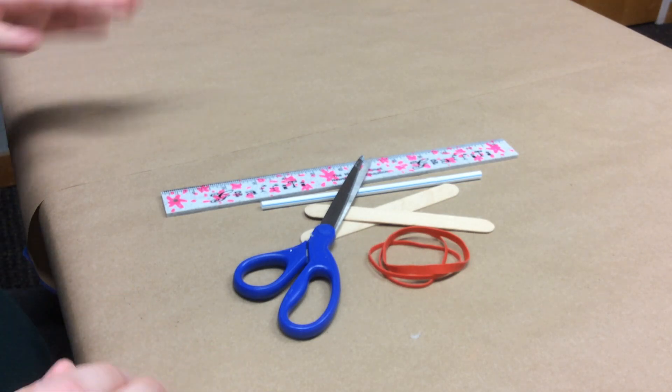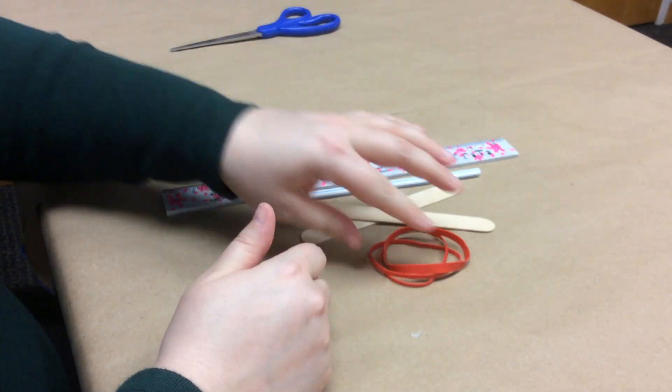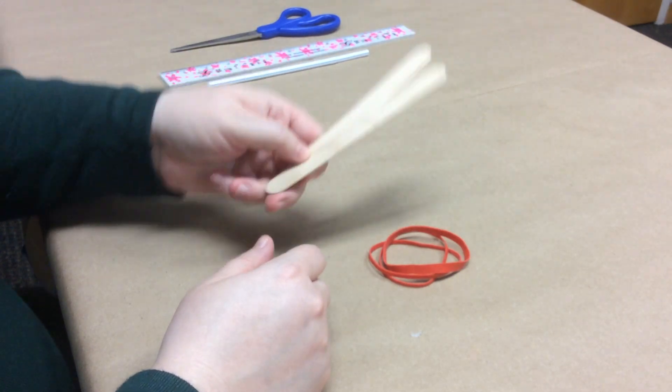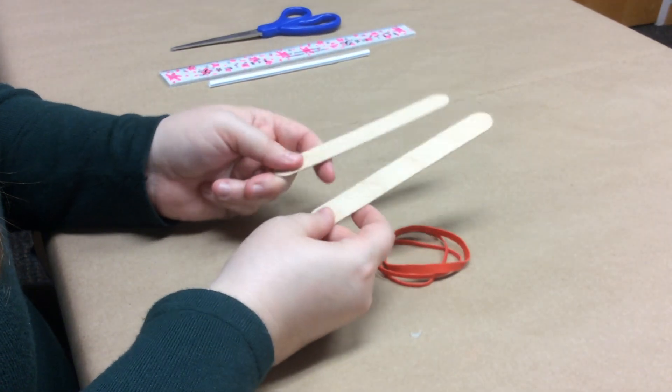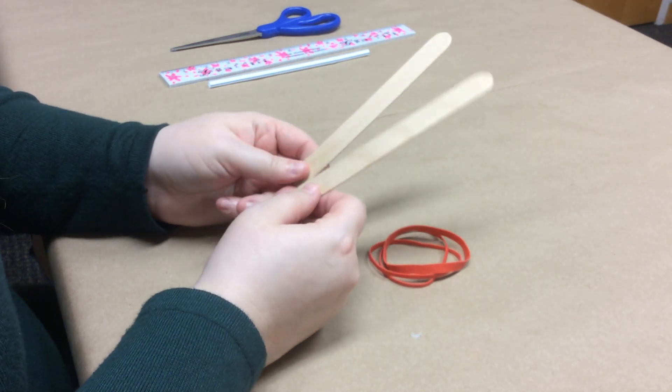For this activity, you are going to need a pair of scissors, a ruler, a straw, two craft sticks that are the large size, so these are not your regular size popsicle sticks, these are the larger ones.